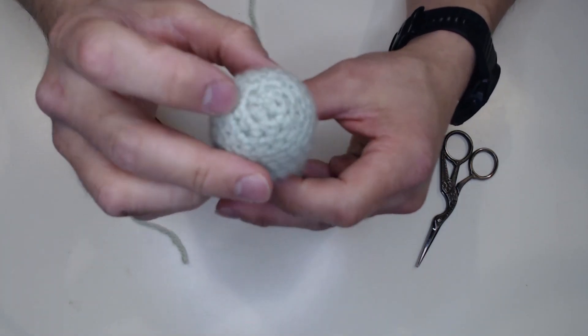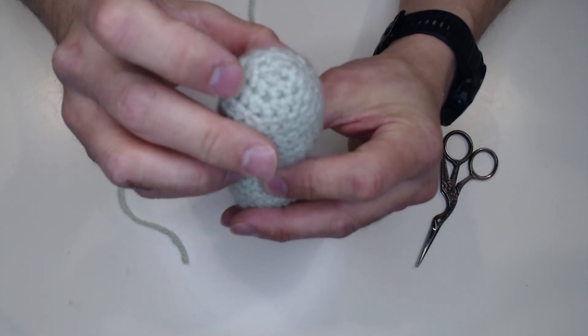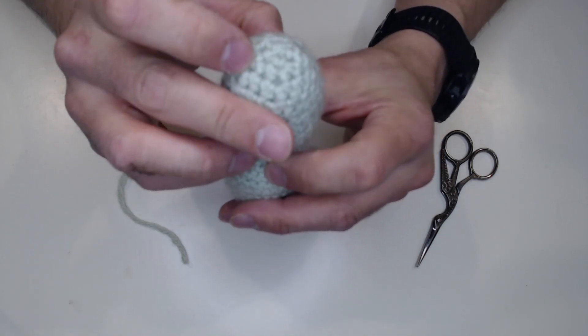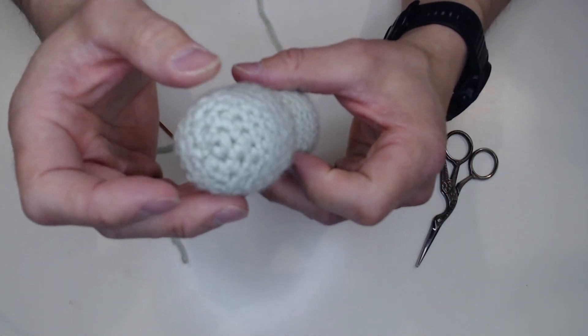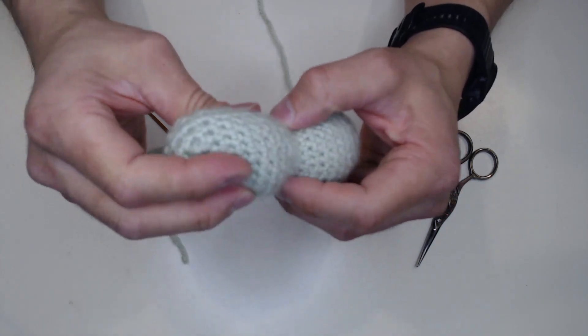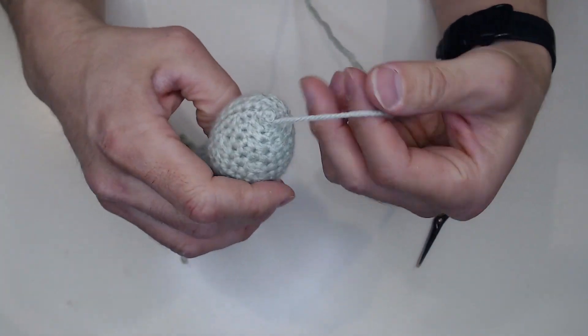And number three is you can bury the knot and it makes it look nice and tidy at the very end, and then you don't have to worry about trying to bury the yarn or hide it or have it kind of unravel sometime when someone's playing with it.